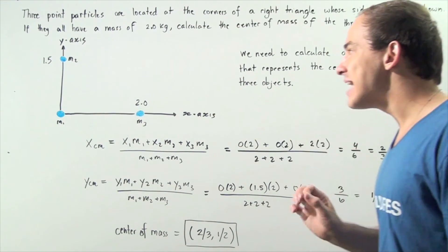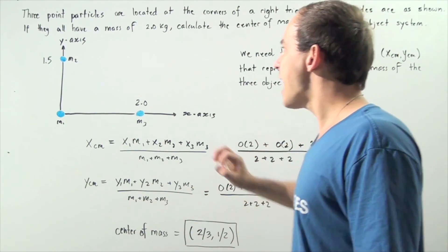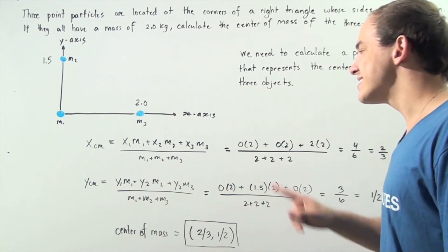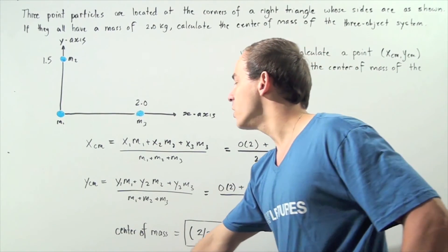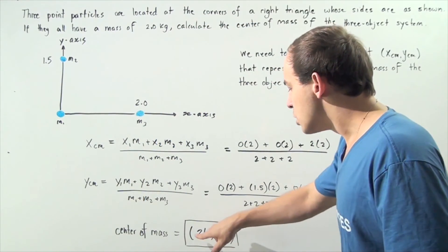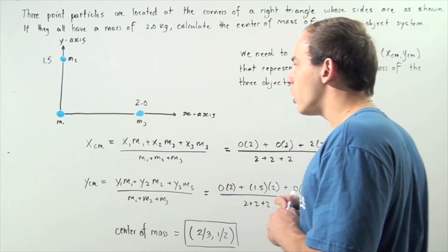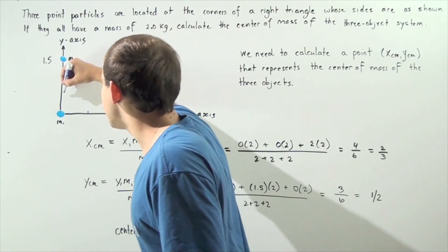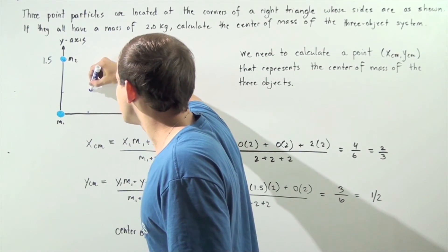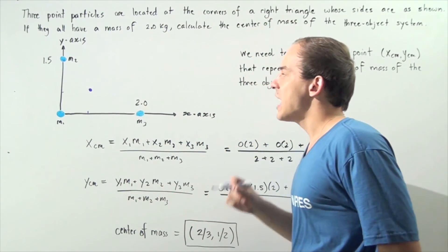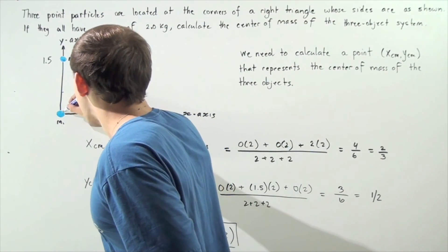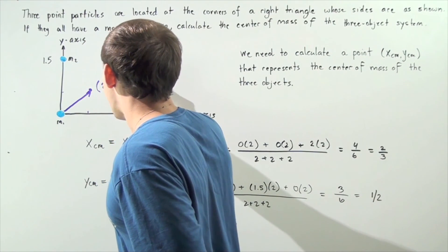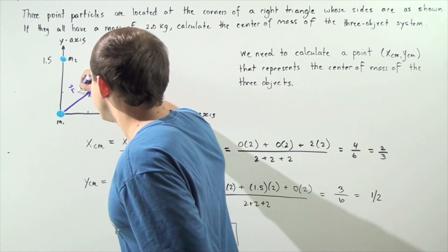The center of mass is located on the XY plane at the coordinate point (2/3, 1/2). Labeling it on the diagram: 2/3 units to the right along the X axis and 1/2 unit up. This point represents the center of mass. In vector notation, our center of mass vector CM is given by 2/3 comma 1/2.